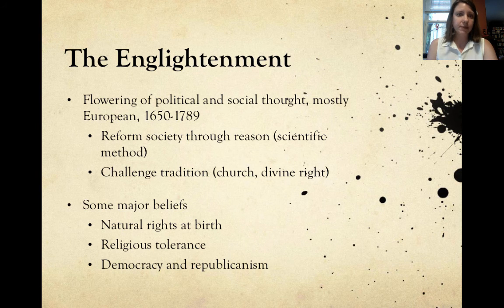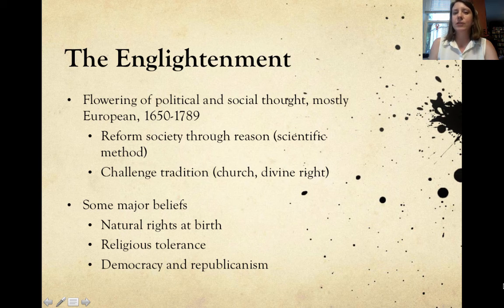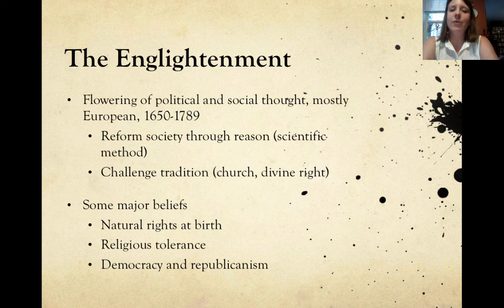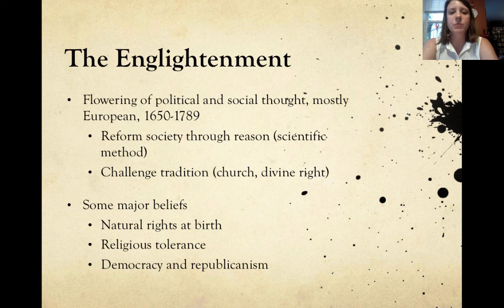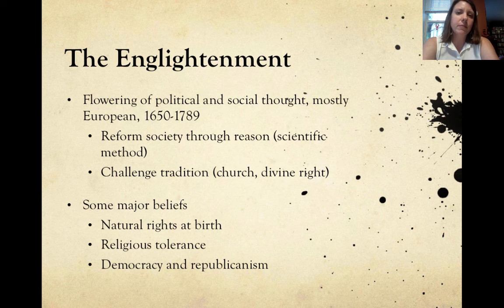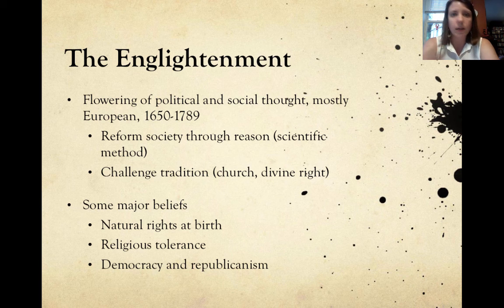An important place to start is with the Enlightenment, which I have misspelled on this slide — see if you can spell it right at some point in class. The Enlightenment is a flowering of political and social thought, mostly European, that takes place between the years 1650 and about 1789, which is when the French Revolution begins. People during the Enlightenment — mostly learned European men — felt that they could reform society through reason, using their minds to apply logic to the problems of the world and solve them.